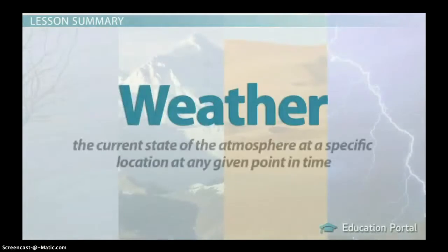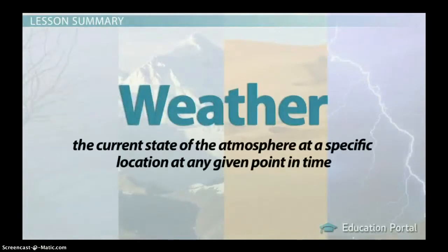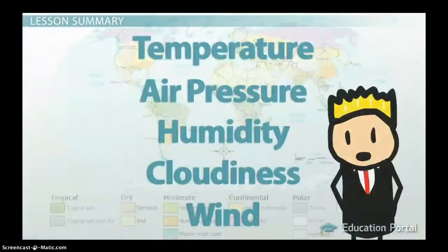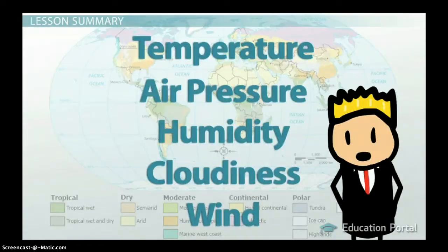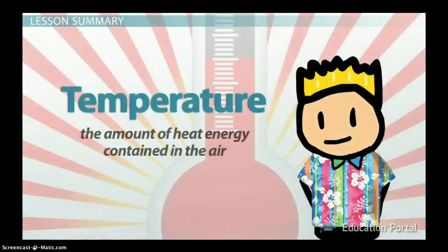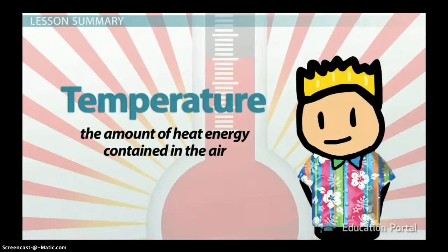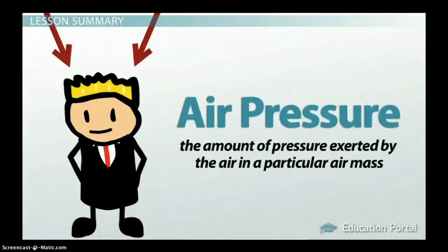Weather is the current state of the atmosphere at a specific location at any given point in time. The weather is mostly influenced by the physical properties of air masses near the surface. Those physical properties include five main factors. Temperature is the amount of heat energy contained in the air, and we measure this in degrees. Air pressure is the amount of pressure exerted by the air in a particular air mass.